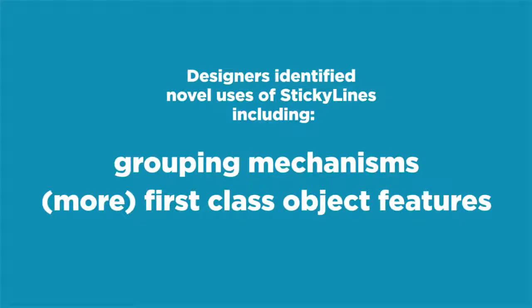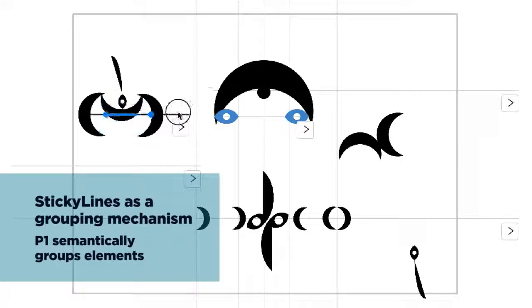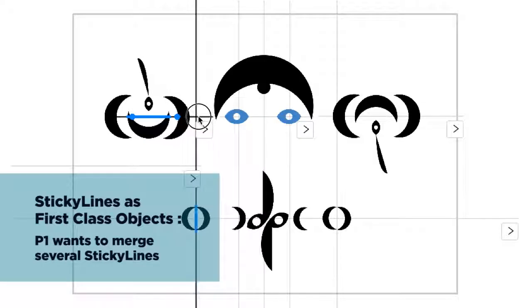We observed numerous unanticipated uses of sticky lines, such as using tweaks and bounding boxes for grouping, and wanting to align sticky lines. For example, participant 1 used sticky lines to semantically group elements. In the second task, he wanted to merge two guidelines that were visually aligned.